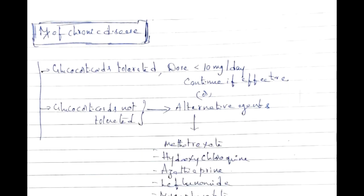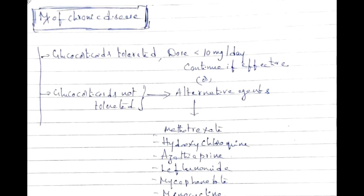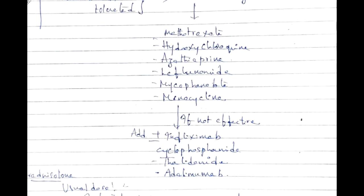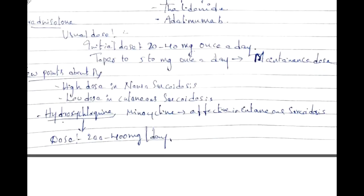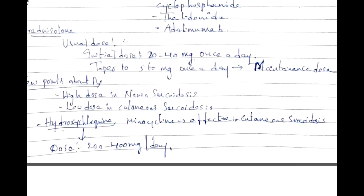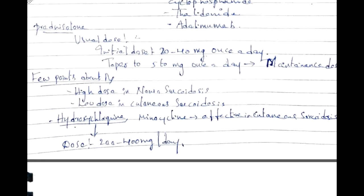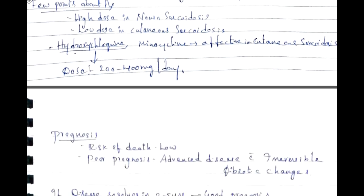For chronic disease management, glucocorticoids are well tolerated at less than 10 mg per day. If not effective, alternative agents include methotrexate, hydroxychloroquine, azathioprine, leflunomide, mycophenolate, and minocycline. If still not effective, use infliximab, cyclophosphamide, thalidomide, or adalimumab. Initial prednisolone dose is 20–40 mg once daily, tapered to 5–10 mg as maintenance. High-dose steroids are recommended for neurosarcoidosis; low dose for cutaneous sarcoidosis. Hydroxychloroquine dose is 200–400 mg per day; minocycline is effective in cutaneous sarcoidosis.